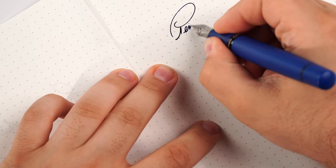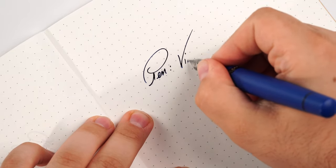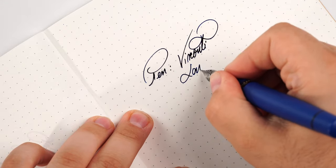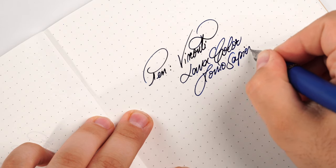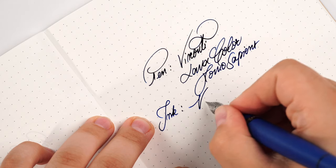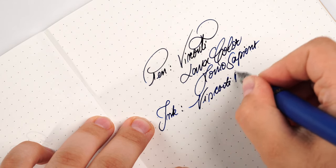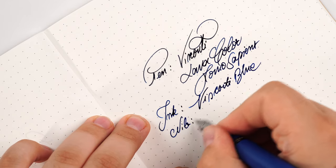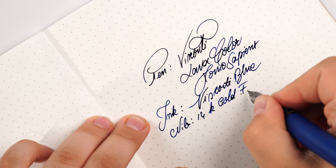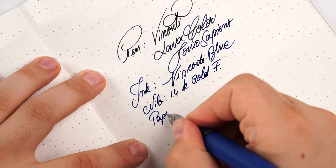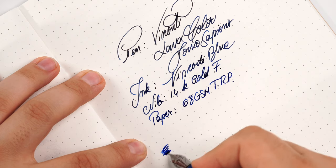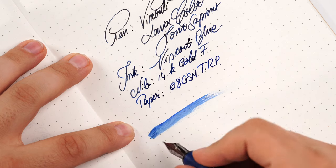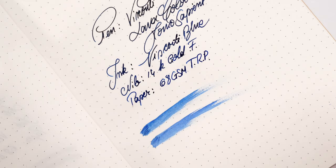So, we have the pen, and this is the Visconti Lava Color Homo Sapiens. Beautiful, beautiful nib. The ink is Visconti Blue. The nib is the 14-carat gold fine nib, and the paper is 68GSM Tomoe River paper, TRP. Now, the wetness. And this is a double pass, and it is a very, very wet nib.